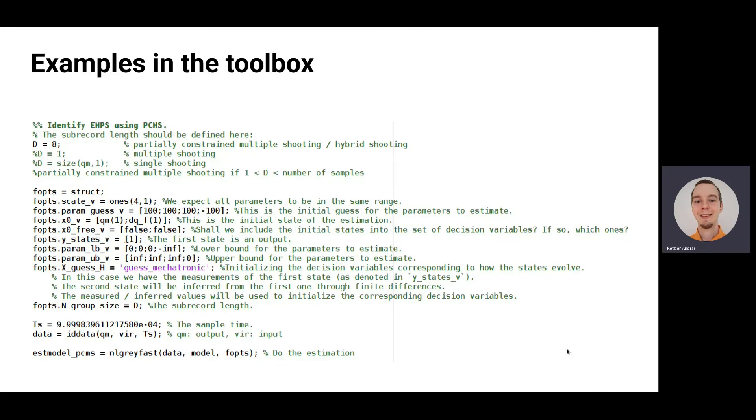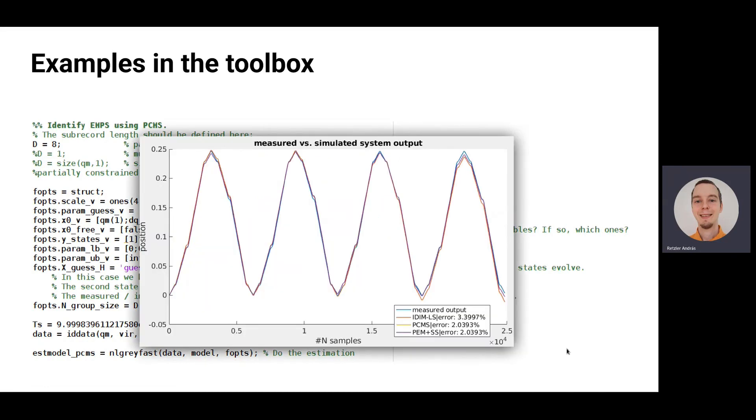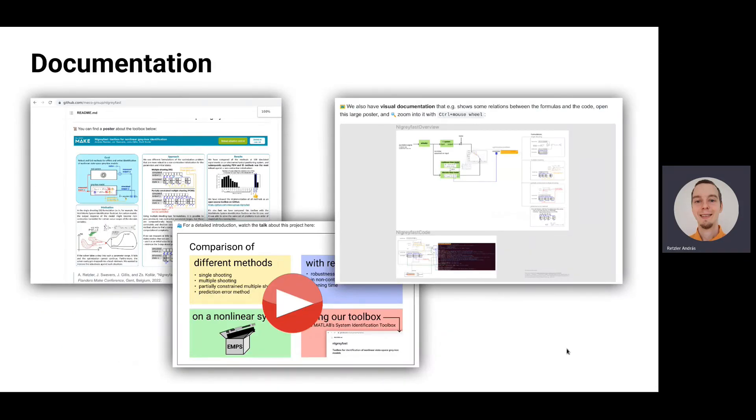Then what else about this toolbox, you can find some examples I try to document as much as possible. So you run this code, then you get the parameter estimates and then the relative errors on the data set of the EMPS, the measured one. Then there is also, it's on the GitHub page, there are quite some visual things there for documentation of how does it work, also some additional things and how the code is related to different parts of the formulas, I'm experimenting with these to make it more understandable.